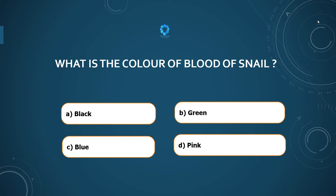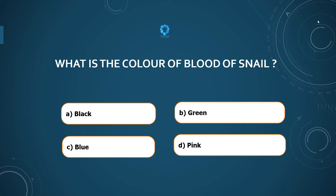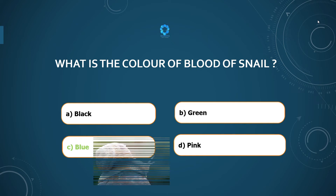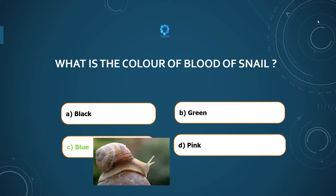What is the color of the blood of a snail? Black, green, blue, or pink? The color of snail blood is blue, due to the presence of hemocyanin.